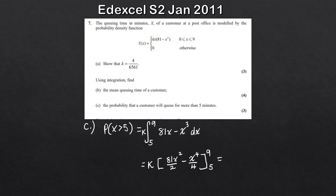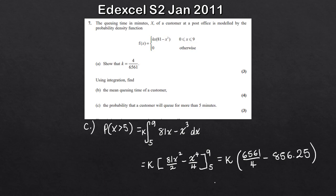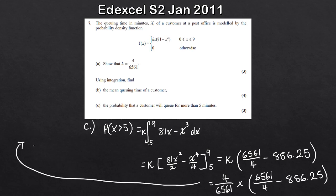Integrating: 81x squared over 2 minus x to the 4 over 4, evaluated between 5 and 9. Plugging in the limits: substituting 9 gives 6561 over 4, and substituting 5 gives 856.25. Multiplying by k equals 4 over 6561, the probability works out to 0.478. So there's approximately a 0.478 probability that a customer will queue for more than five minutes.